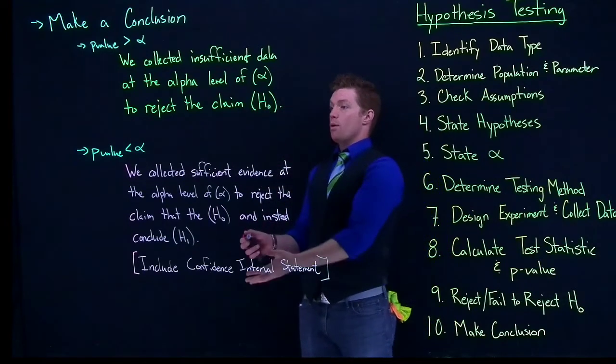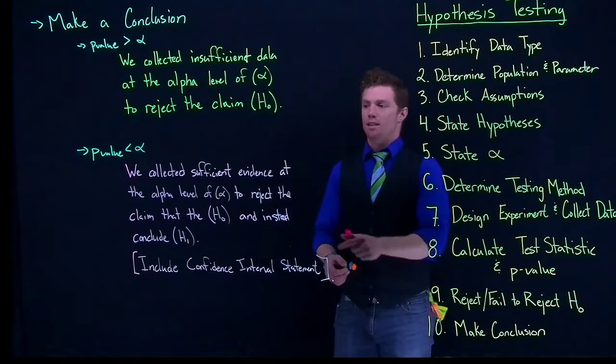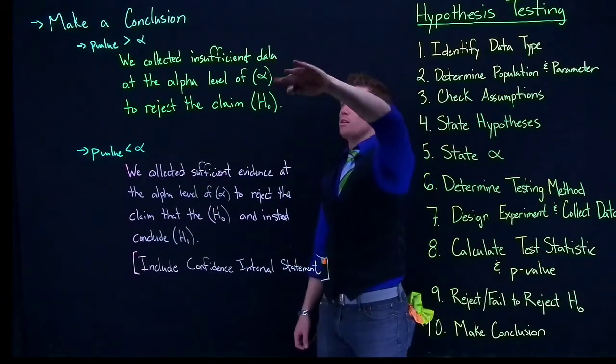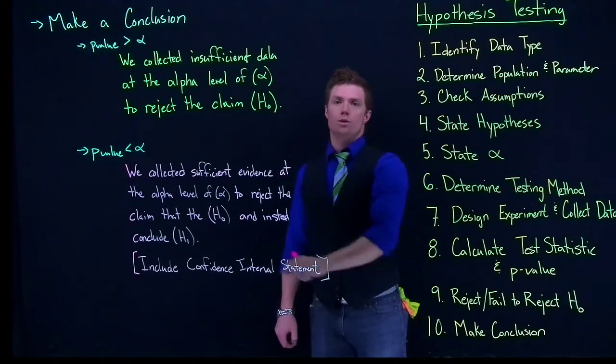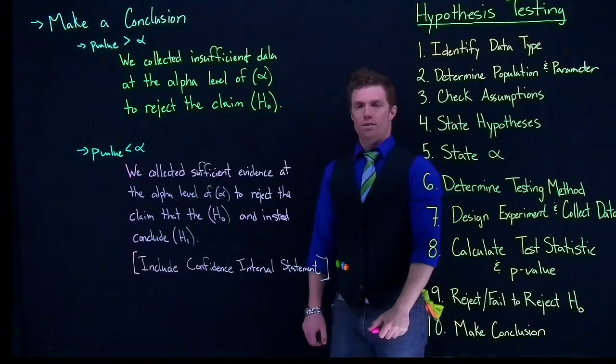And this is how we make our conclusion, where we're saying did we, if we fail to reject, we just have to say that. But if we rejected, we also need to include our confidence interval.